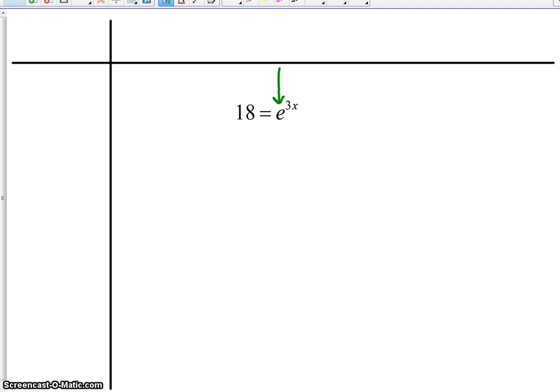So just like we did with logarithms, I'm going to take the natural log of both sides. Because what happens is our power property says, hey, that means I can take this exponent out in front.